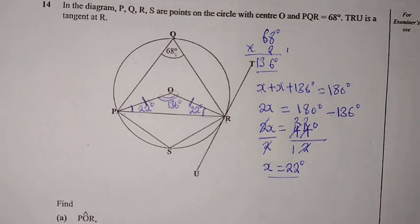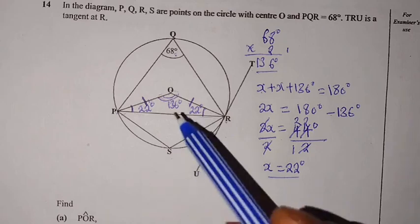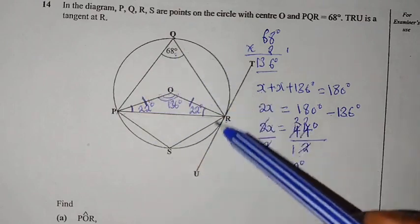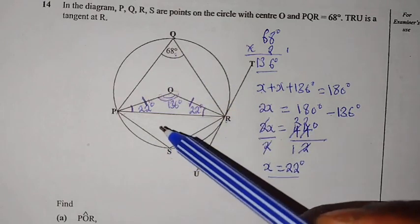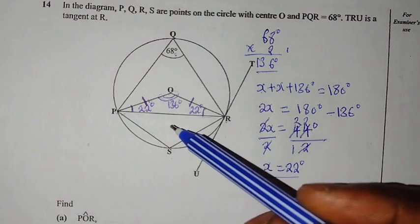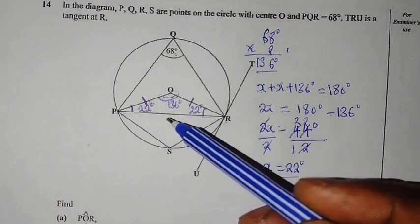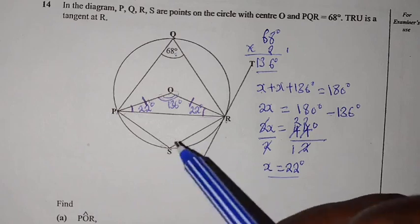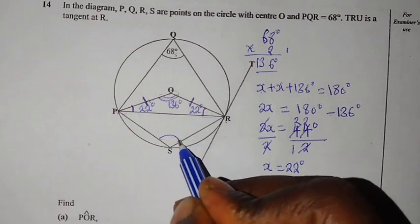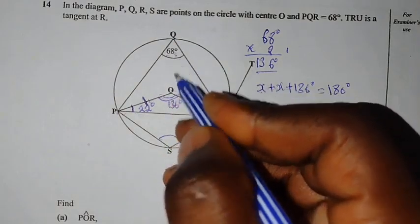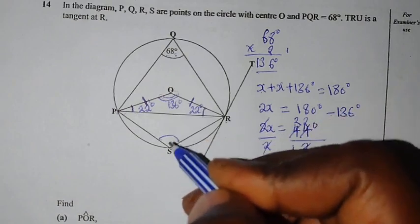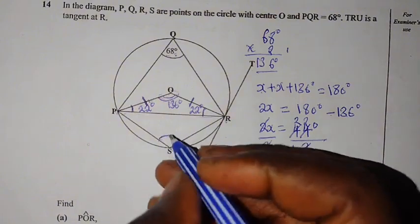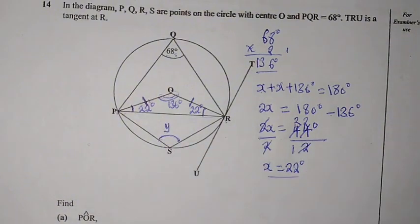From there, there is another property that we can use. You can see P, Q, R, S. This is what we call a cyclic quadrilateral. Opposite angles in a cyclic quadrilateral add up to 180 degrees. So this angle is opposite to this one. So this angle and this angle, when we add them, the sum should be 180.